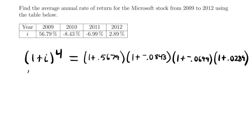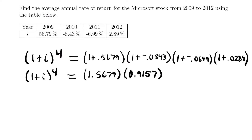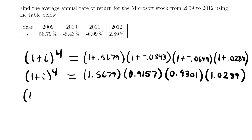If we simplify that, we'll have (1 + i)^4 equal to 1.5679 times 0.9157 times 0.9301 times 1.0289 — that's just adding one to each of these rates. If we multiply all these together, we get (1 + i)^4 = 1.37396, with more decimal places beyond that.